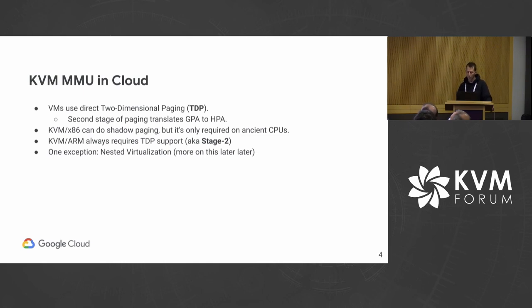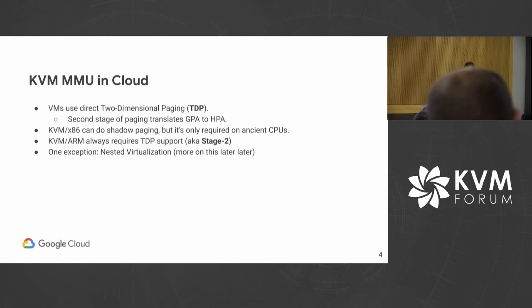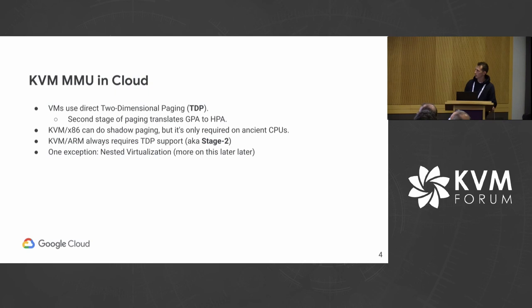KVM x86 can do shadow paging, but it's only really required on ancient CPUs. If you look at ARM, it has always required TDP support, which is called stage two in ARM. The one exception to this is nested virtualization, which does use some amount of shadow paging.